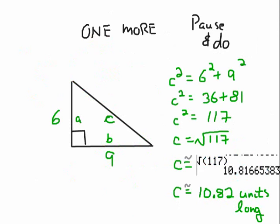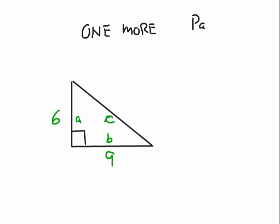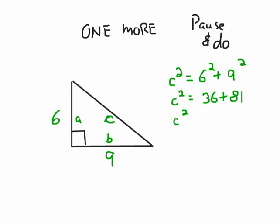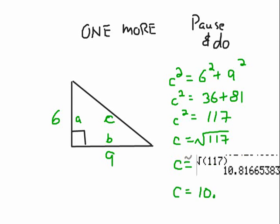How about one more? Pause and do. Okay, so pause. There's my answer. What'd you get? Did you get the same thing? So this hypotenuse side, the side across from the square corner, the longest side, is 10.82. Obviously, it's got to be longer than nine. You can almost eyeball it, too, if it's drawn nicely.